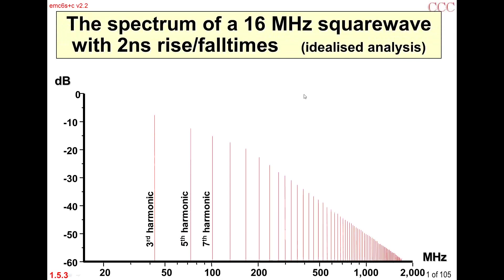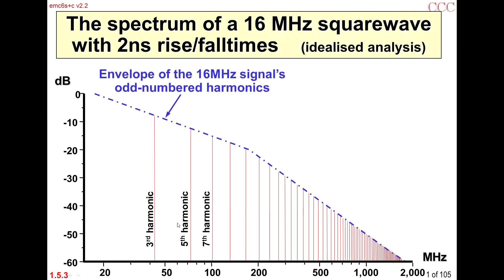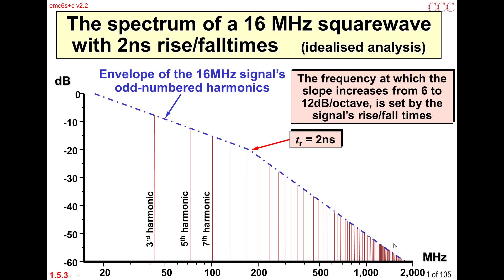Let's look at a 16 MHz square wave — I made this slide a long time ago when 16 MHz was a reasonably fast clock frequency; we can just multiply everything by 10 for 160 MHz. Here's our 16 MHz square wave, pure square wave, two nanoseconds rise time. There's the envelope of the thirds and fifths and sevenths and so on — the classical Fourier transform of a square wave. There's a corner frequency where it starts going off at a faster rate because of the rise time: 20 dBs per decade, then 40 dBs per decade. Even our 16 MHz square wave has energy up to 700 MHz.